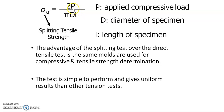The split tensile strength is calculated using the formula 2P / (π × D × L), where P is the compressive load applied, D is the diameter of the specimen, and L is the length of the specimen. The diameter and length are already known — 150 mm and 300 mm respectively. The load is recorded when the specimen breaks. The advantage of the split tensile test over the direct tensile test is that the same mold can be used for both compression and tensile strength testing, and it is very easy to perform.